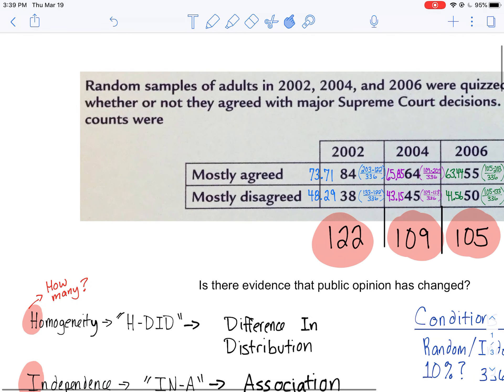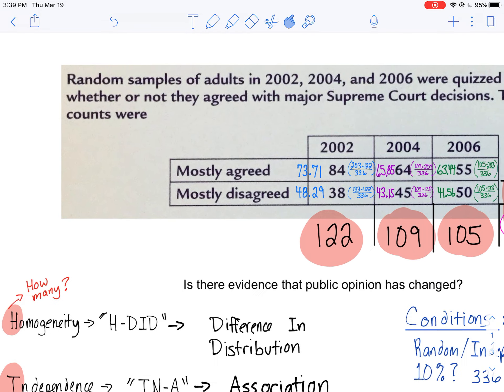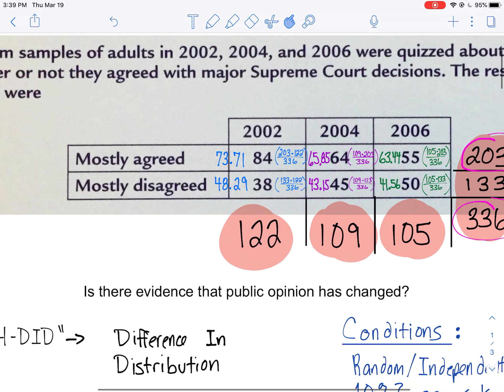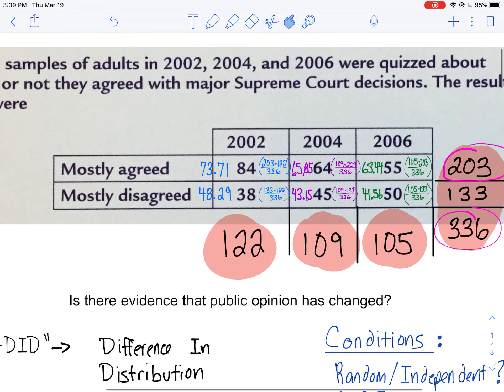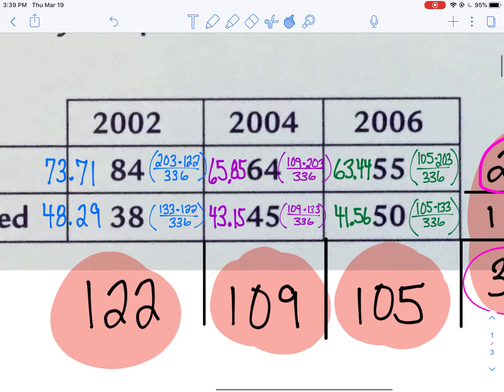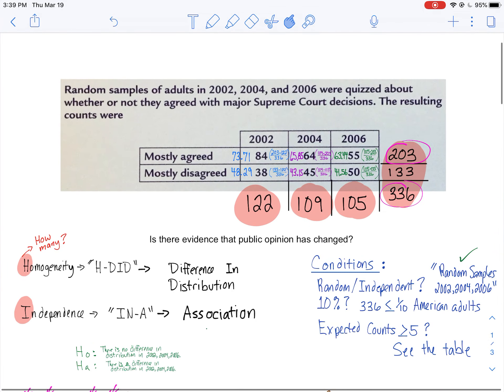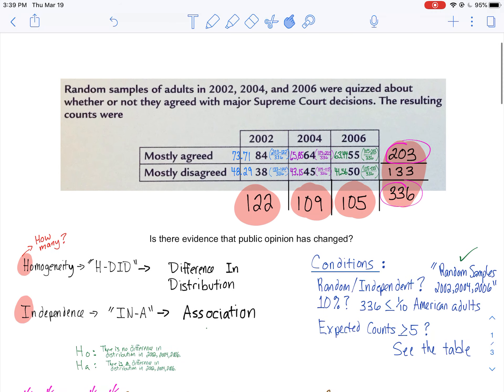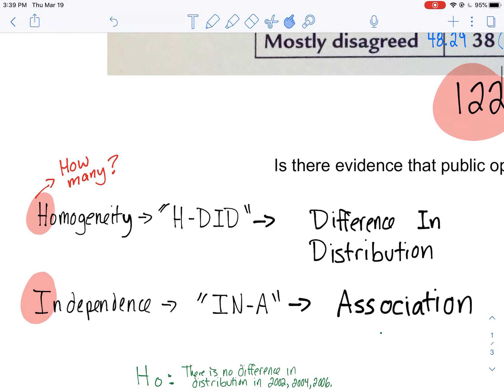In this case, I am looking at a test for homogeneity. Why? Because we did more than one random sample here. We did them in 2002, 2004, 2006. Three distinct populations: population from 2002, population from 2004, population from 2006. So I know this is going to be a test for homogeneity, so I can cross out independence because I'm not going to need that today.